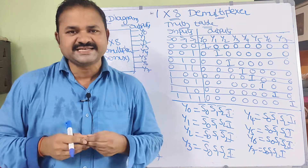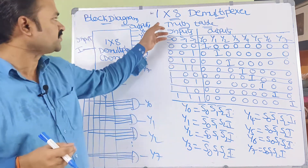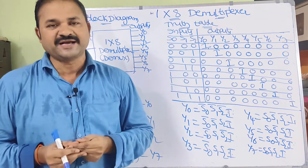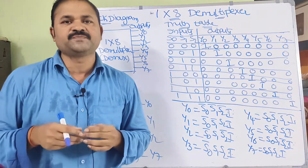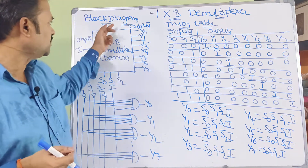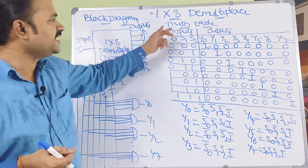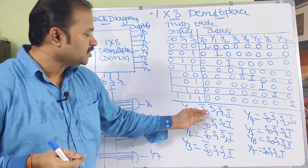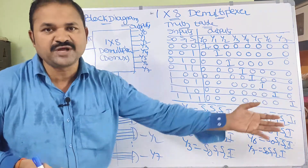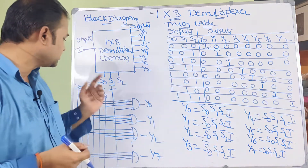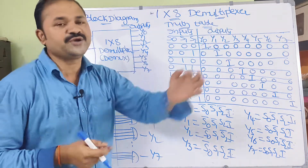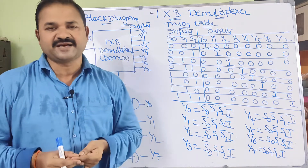Let us discuss about the 1 by 8 demultiplexer. In this video, we are going to discuss about the block diagram, truth table, logical expressions or boolean expressions, and the circuit diagram for the 1 to 8 demultiplexer.